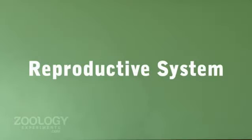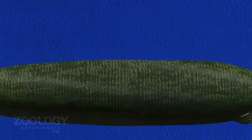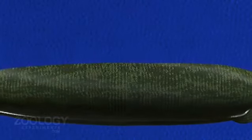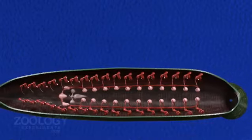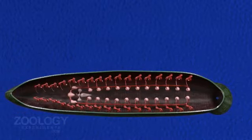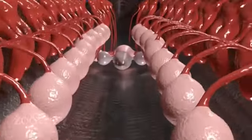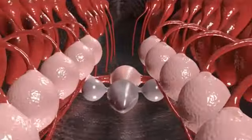Reproductive system, which is hermaphroditic. Each individual contains a complete set of well-differentiated male and female reproductive organs. They never show self-fertilization. Cross-fertilization takes place by copulation.